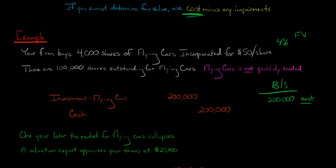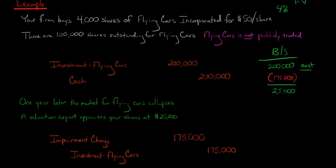So you're supposed to be at cost minus any impairments. So if the value is supposed to be $25,000 and you're at $200,000, then you've got to make an adjusting journal entry. So what's going to have to happen is this is going to have to go down by $175,000. And so when that goes down, we call that an impairment.